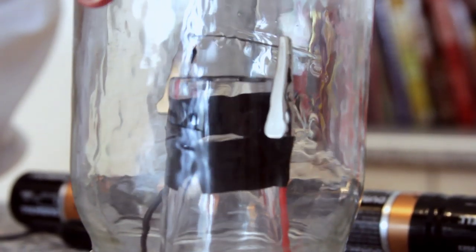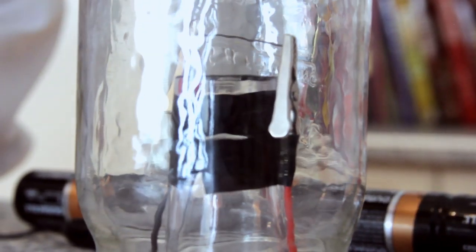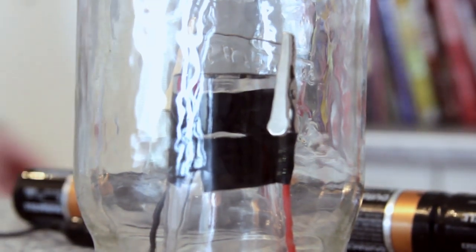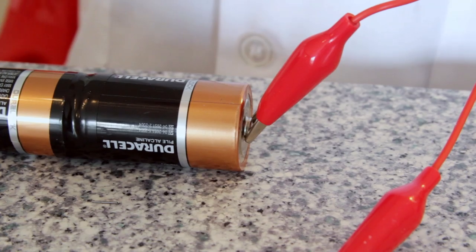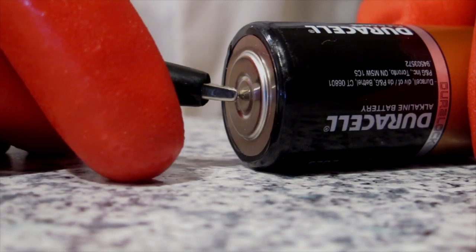Place the mason jar or a large glass over the top of the shot glass. This will contain any gases produced in this reaction. Next, clip one of the alligator clips to the positive side of your super battery. Then, touch the other alligator clip to the flat negative side of the battery.